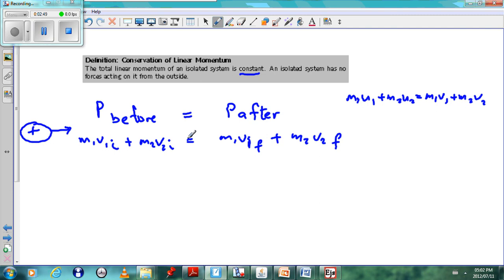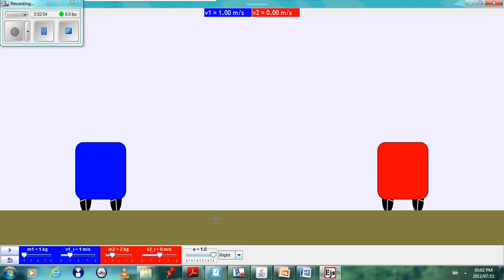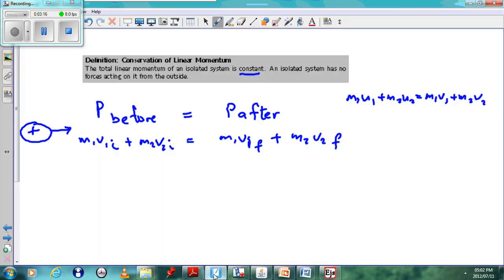Let's look at an example that we have here. Here I have a Java applet. The mass of the blue car is 1 kilogram, and the mass of the red car is 2 kilograms. The velocity of the blue car is 1 meter per second, and the red car is 0 meters per second. We want to calculate what happens after that.